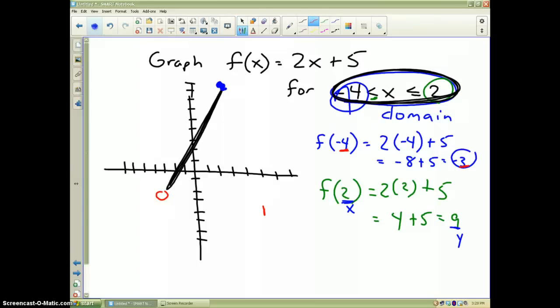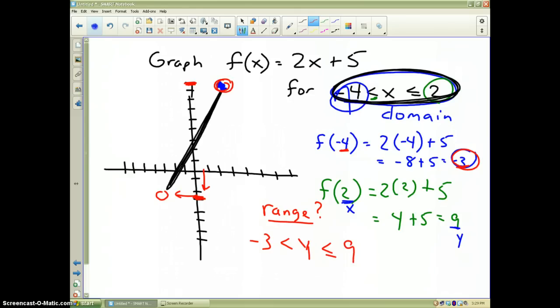Finally, what's the range? Well, we learned that the range goes from the lowest y value, which we found out is negative 3, to the highest value, which would be 9. So, therefore, my y values go from negative 3. And since that is an open dot, it's less than y, which is less than or equal to positive 9, because that is a filled in dot. And that would be my range from the low value up to the high value.